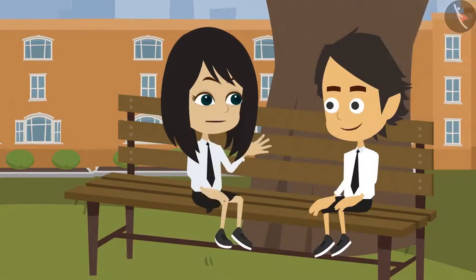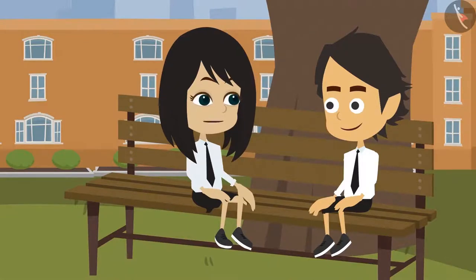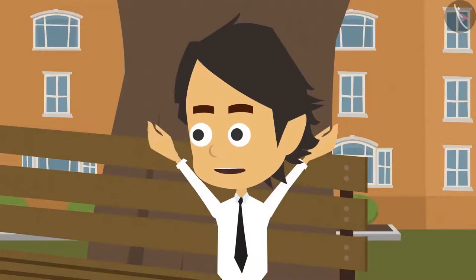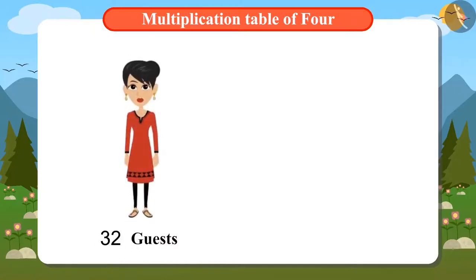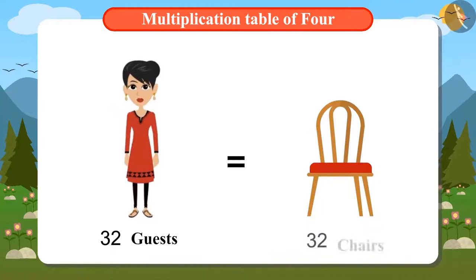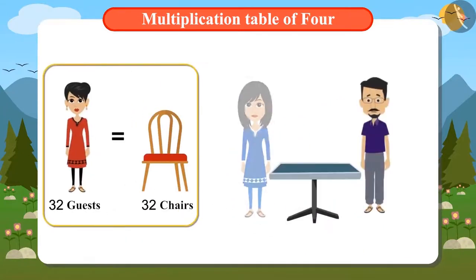Why not? You can find out the number of tables in the same way you found out the number of chairs. It's not that simple. It is very easy to find out the number of chairs. There are a total of 32 guests coming. So the number of chairs also will be 32.